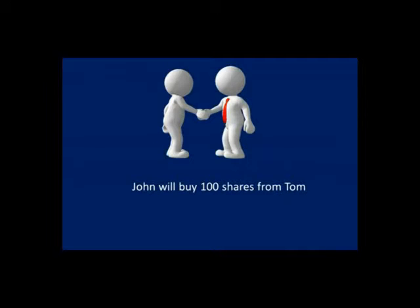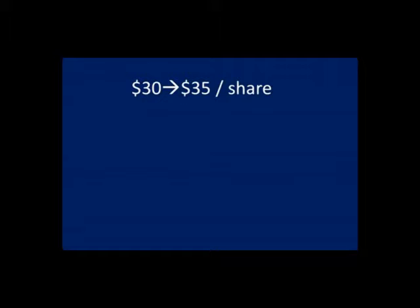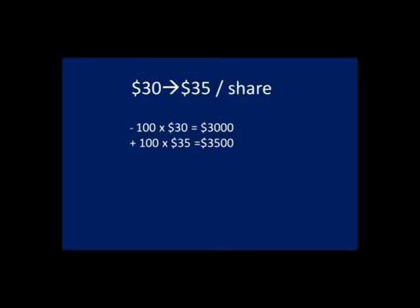Let us say that John will buy 100 shares from Tom for a price of $30 per share. John thinks the price is going to go up. Tom thinks the price is going to go down. Let us say the price goes up to $35 per share. John would then have to pay $3,000 for his 100 shares if he chose to buy them, but he could then immediately sell them for $35 per share and make a profit of $500.